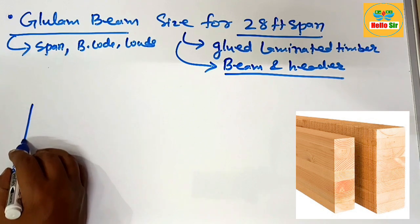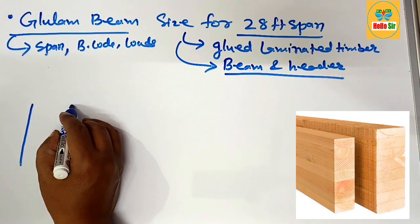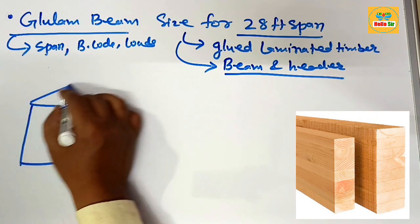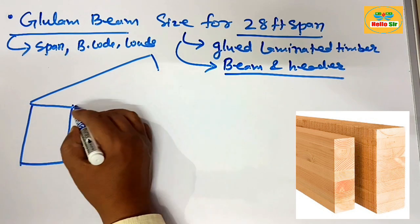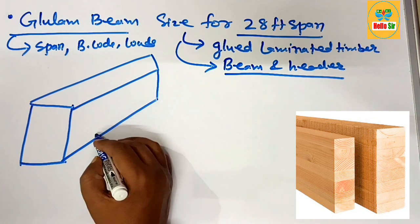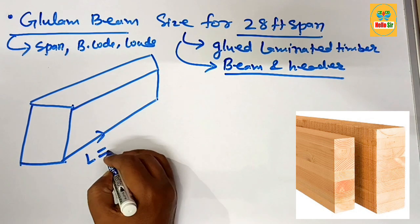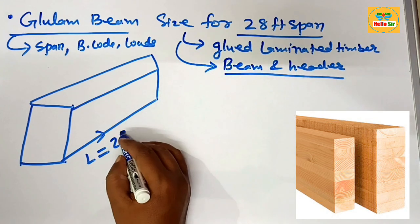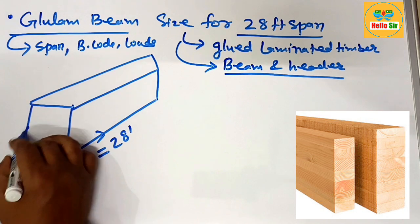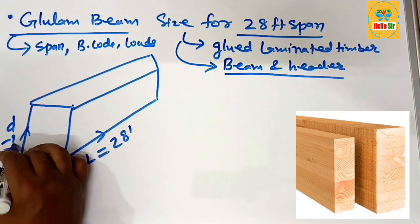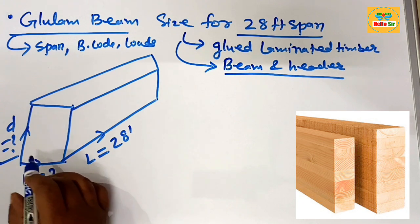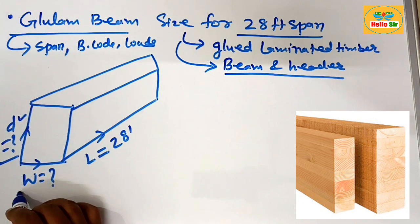You have to understand the depth, width, and length of the beam. Here we make a rough diagram to show the three main dimensions. The length is given as 28 feet, the width is the horizontal cross-section, and the depth is the vertical cross-section of the beam.